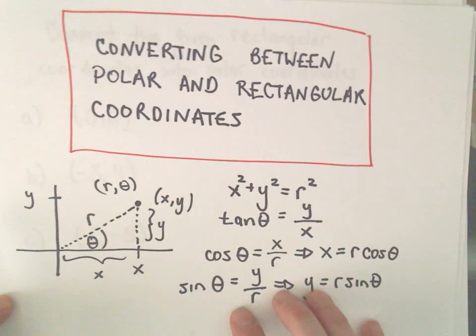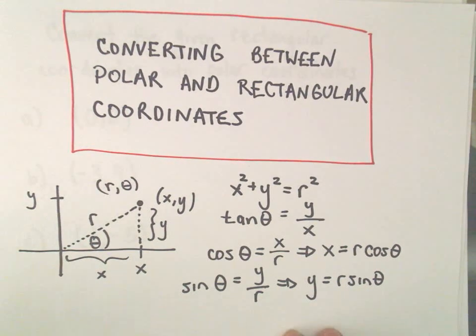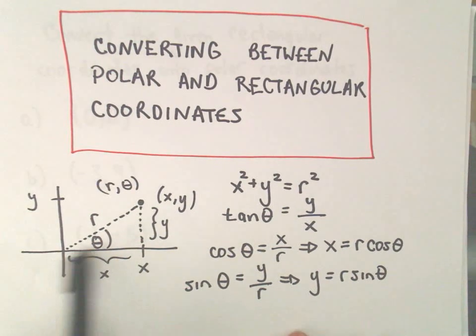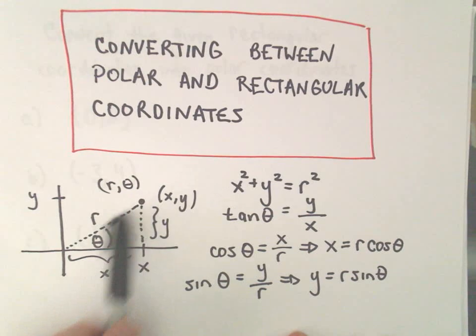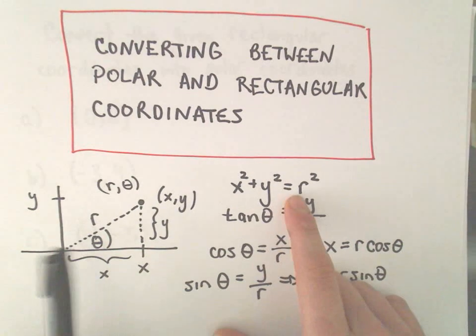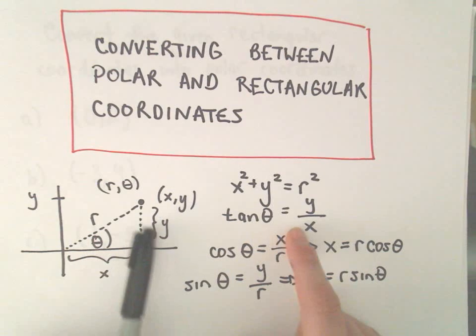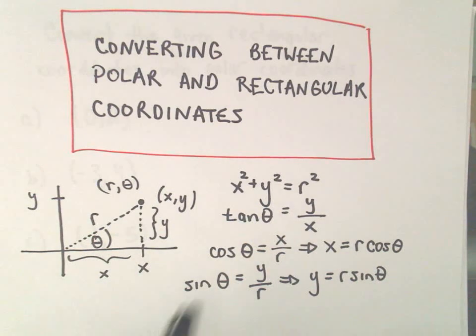And we can just get all of these relationships between polar and Cartesian coordinates by doing a bit of geometry. You could use Pythagorean theorem: x squared plus y squared equals r squared. Tangent's just opposite over adjacent, so tangent of theta would be y over x. And we can do the same thing for cosine and sine.